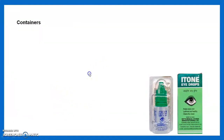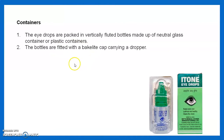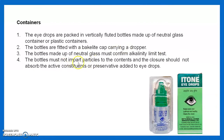Eye drops are packed in vertically fluted bottles made of neutral glass or plastic containers, fitted with a backlight cap carrying a dropper. Bottles made of neutral glass must conform to an alkalinity limit test, must not impart particles to the contents, and closures should not absorb the active constituent or preservative added to the eye drops.